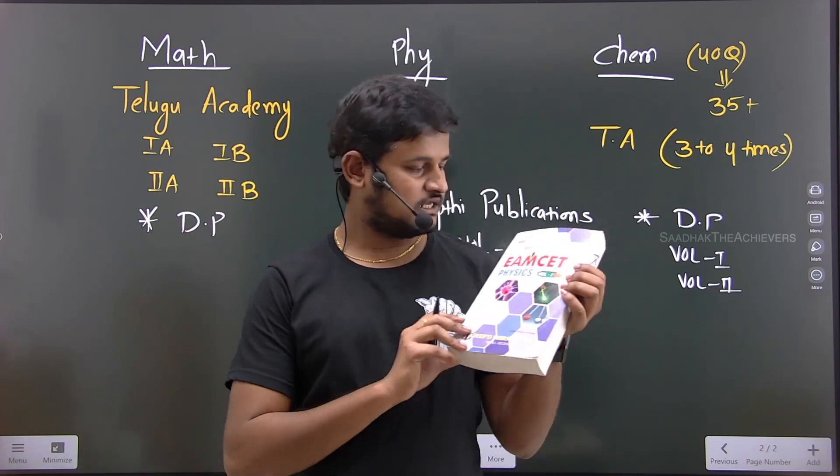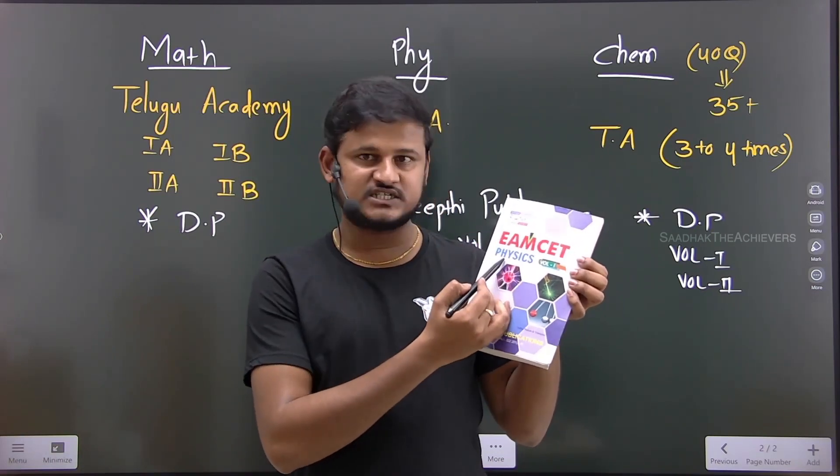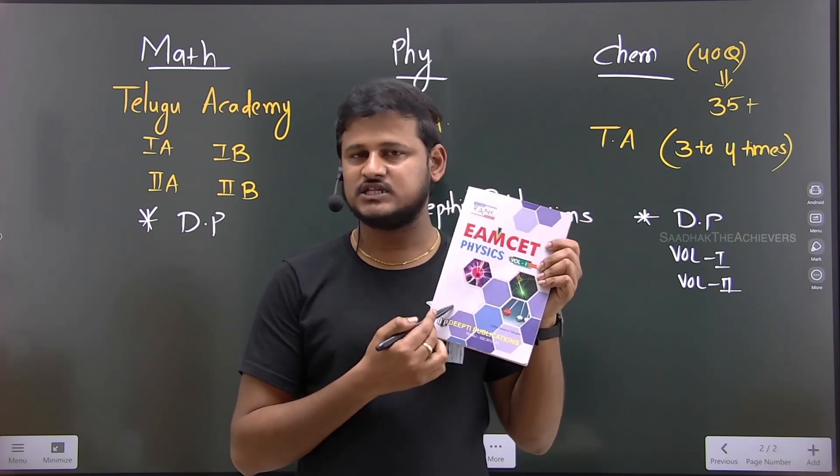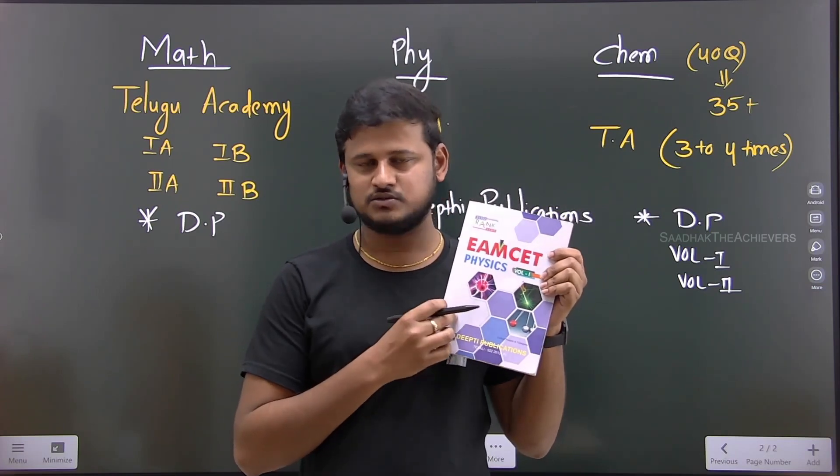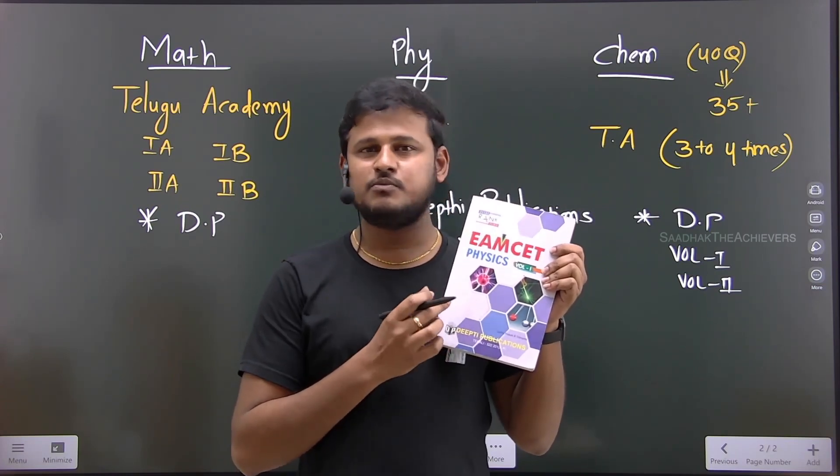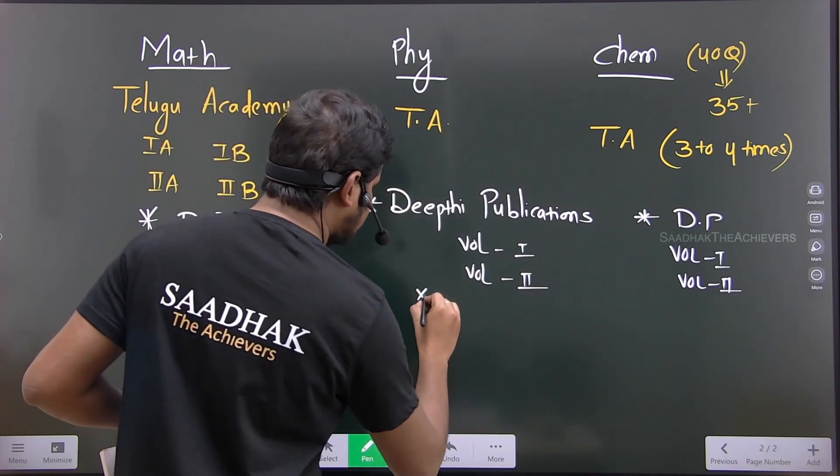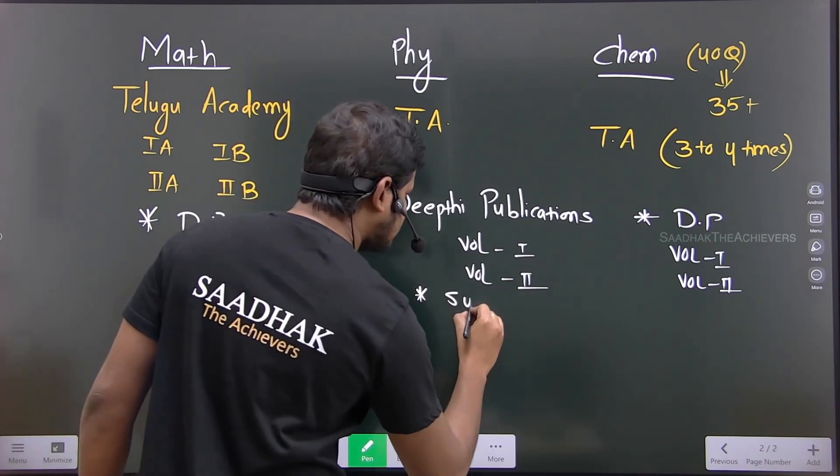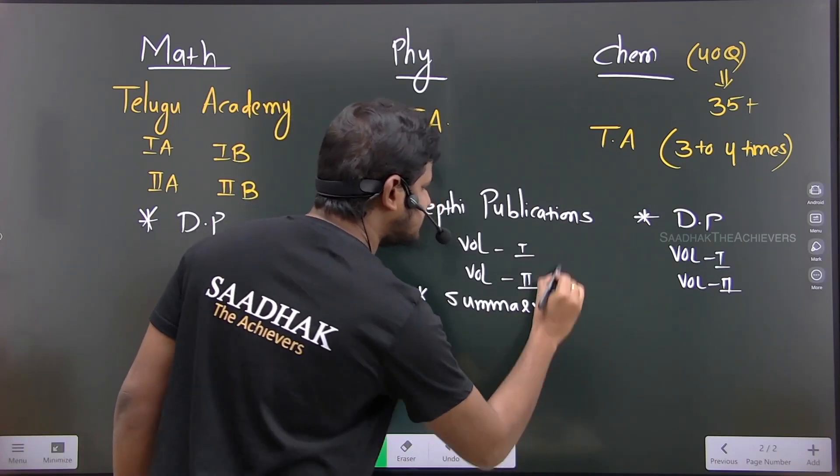So this book, this is the Deepti Publications Rank Series, Deepti Rank Series. So MSET Physics and it is volume 1. This is actually old version, new version you can see in the description. So the benefit of these books is - chapter 1, you can see the Telugu Academy. Here, complete chapter summary first, complete chapter summary.